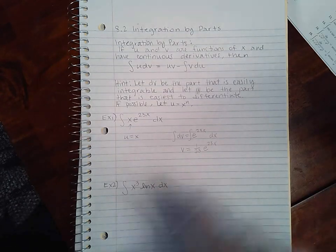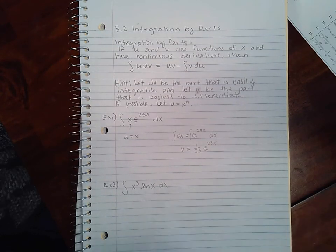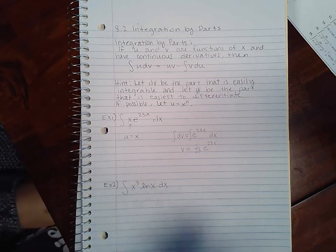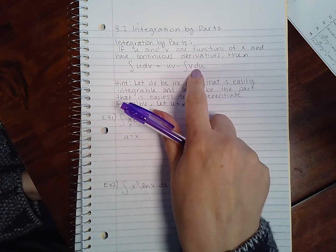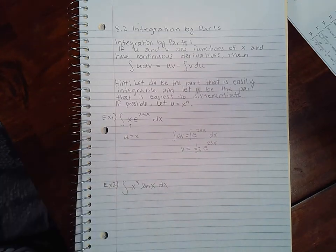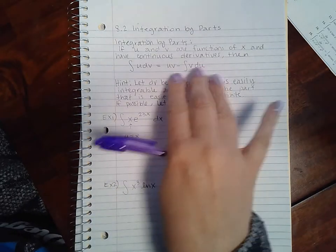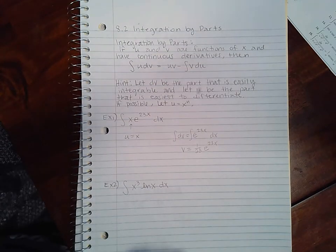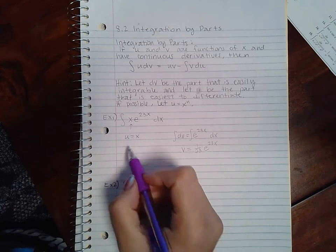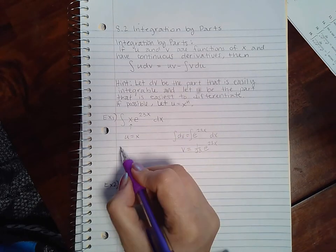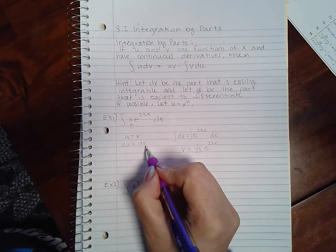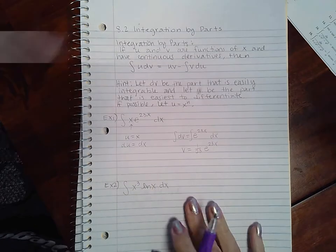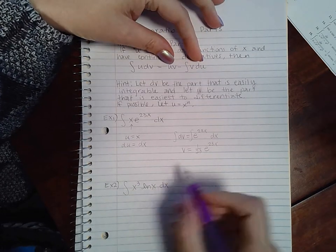The integral of e to the 23x dx gives us 1 over 23 times e to the 23x. You don't need to put the plus c here — wait to put it at the very end of the entire problem, after you've found the final integral. We still need du as part of the formula, and the derivative of x is just dx, so we have all our pieces.